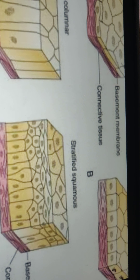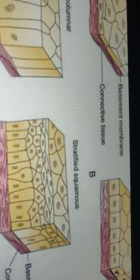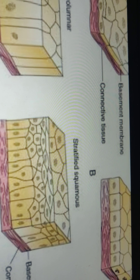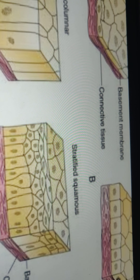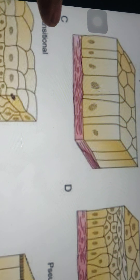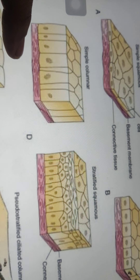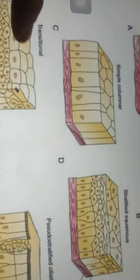The keratinized stratified squamous epithelium is found in dry places, such as the skin, hair, and nails.